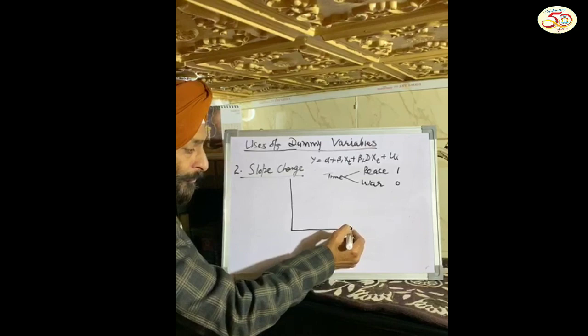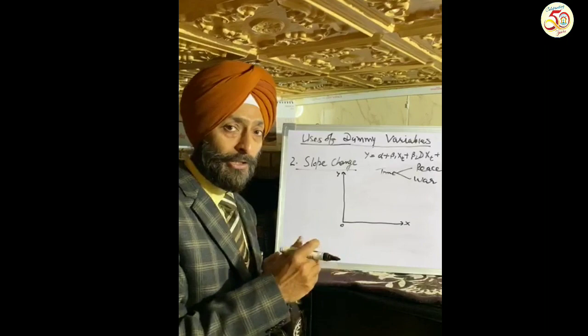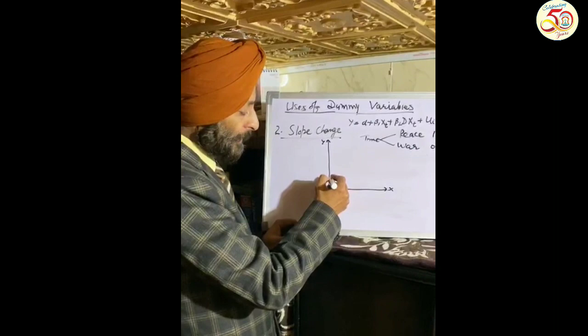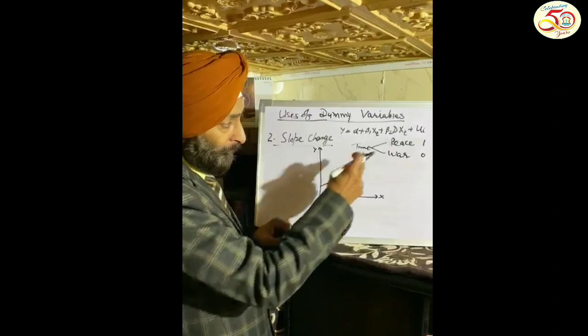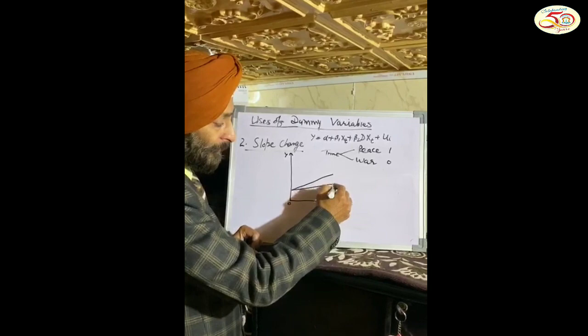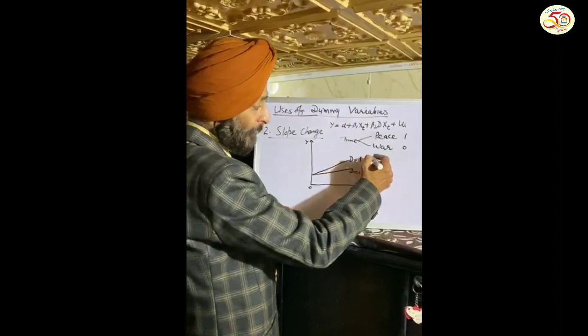Now let us plot this in a diagram. Suppose X is income and Y is consumption. Consumption is dependent on income, but time period — whether it is normal/peace time or war time — also affects consumption. This is the normal time period consumption function. In normal time, consumption will be more, while in war time consumption will be less. So when D = 0 (war time) we get one slope, and when D = 1 (peace time) the slope changes.